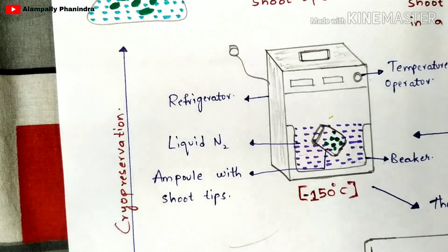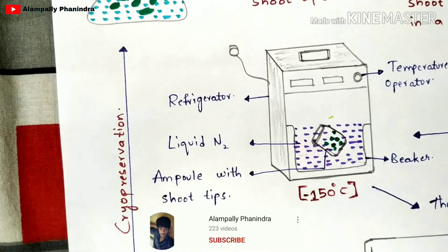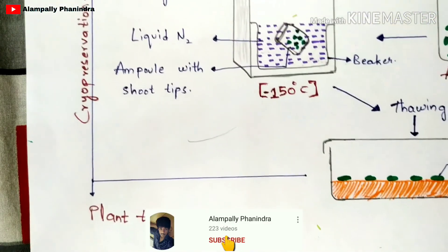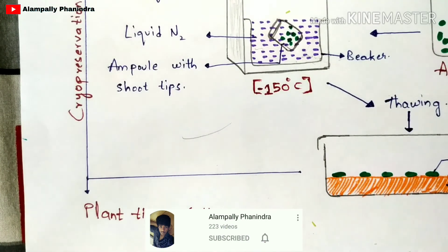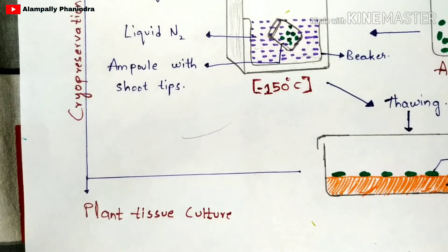So either the material undergoes the process of cryopreservation again, or it can be used for the plant tissue culture technique. This is the complete procedure of the cryopreservation technique.